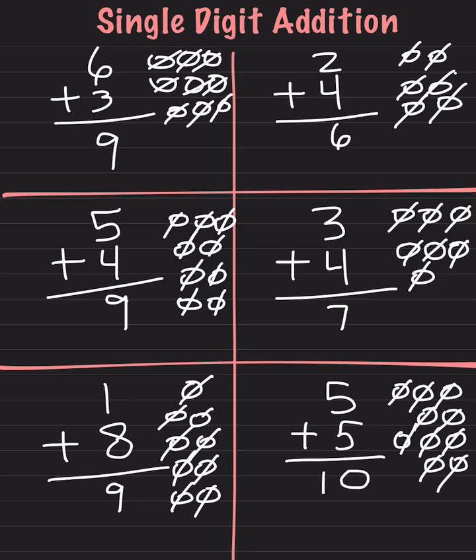We can also do mental math here as well. We start at 5, then we add 5 more: 5, then 6, 7, 8, 9, 10. And our answer is 10.